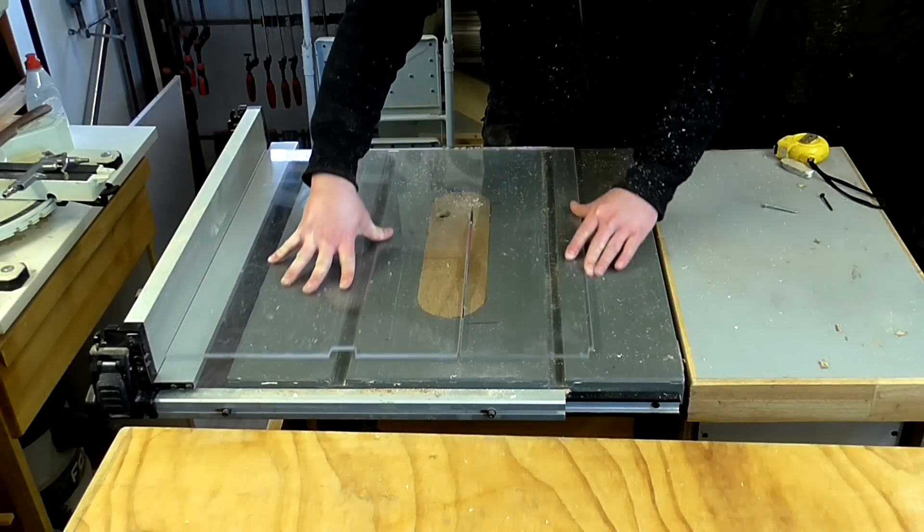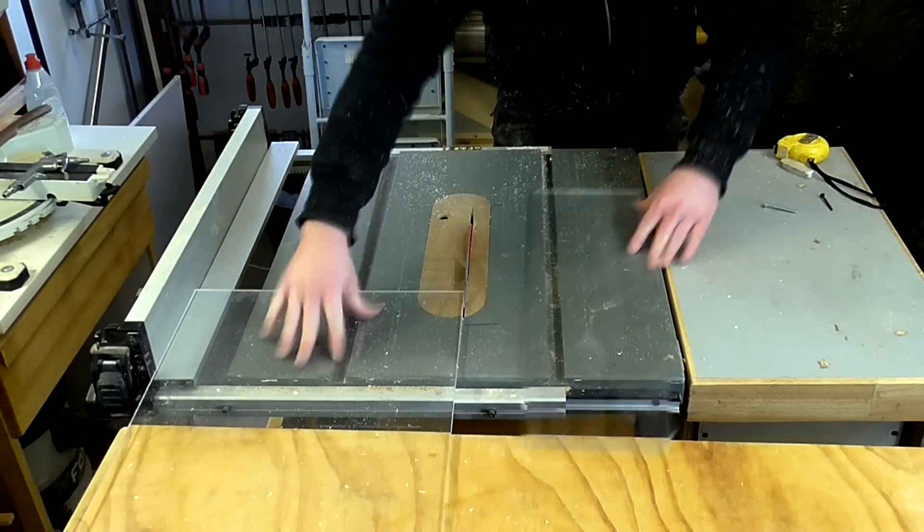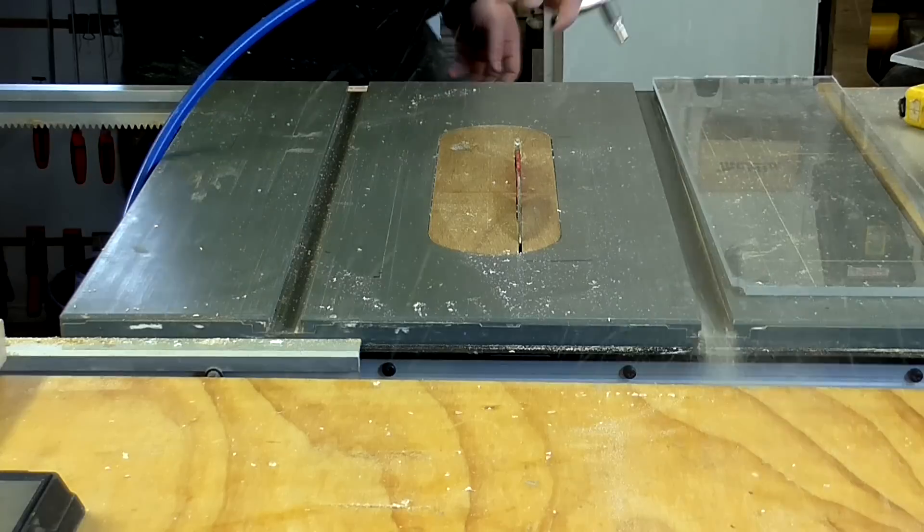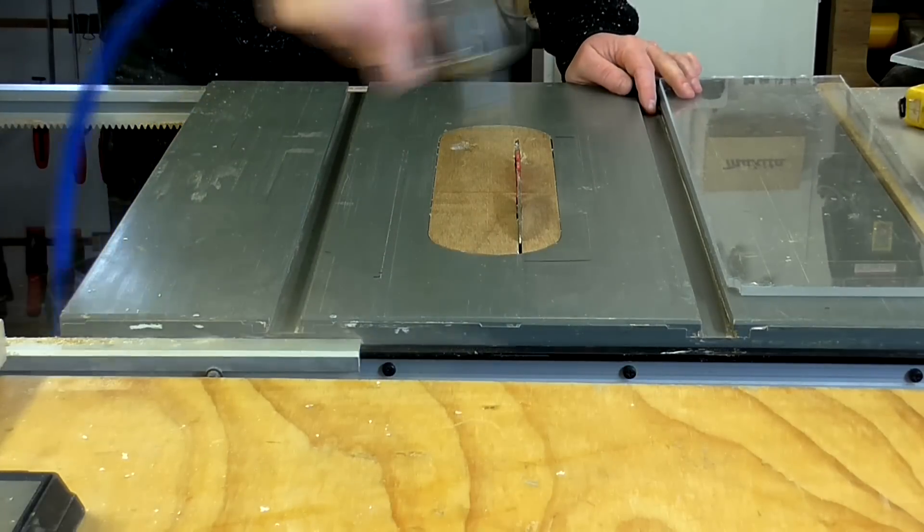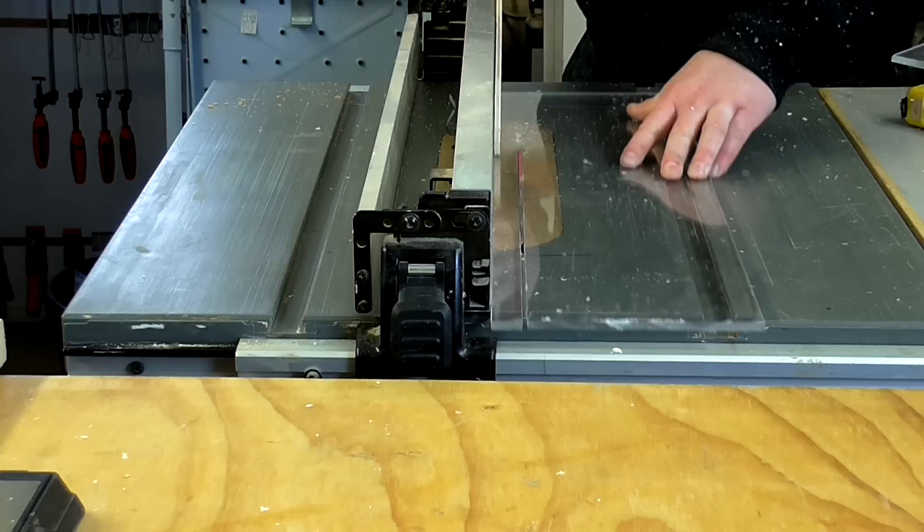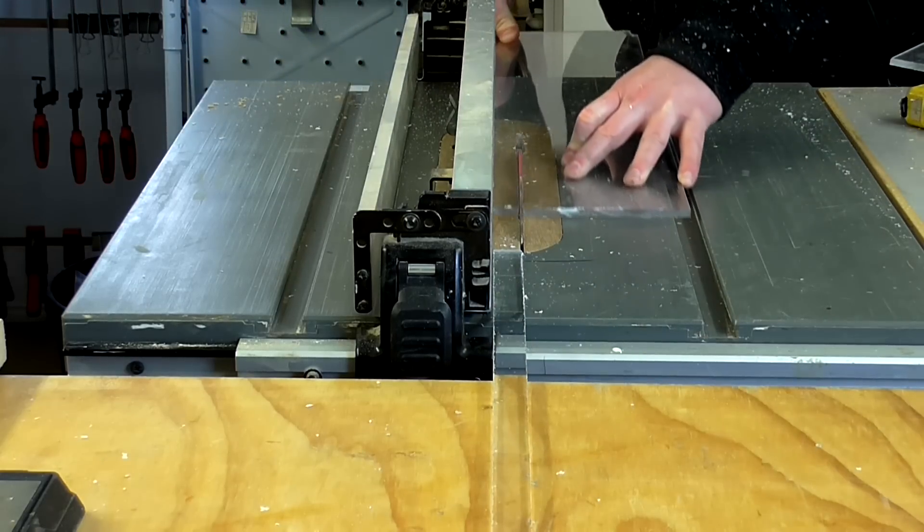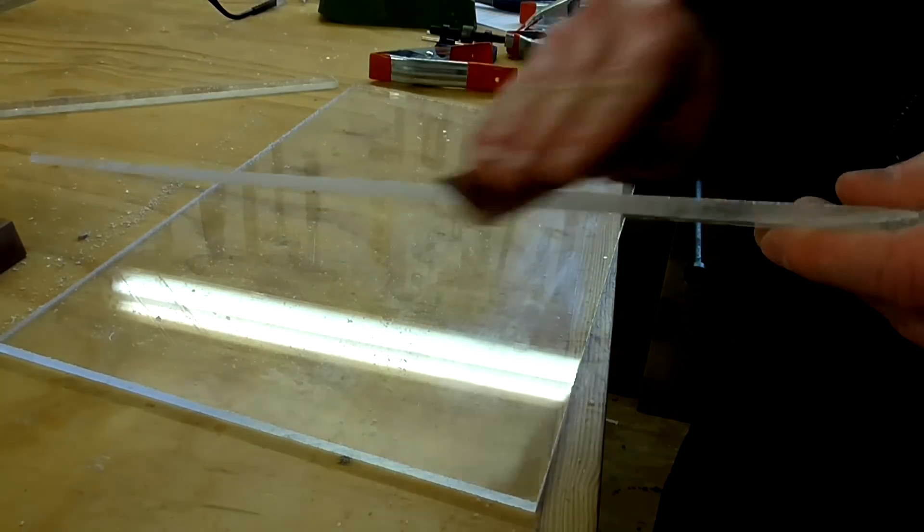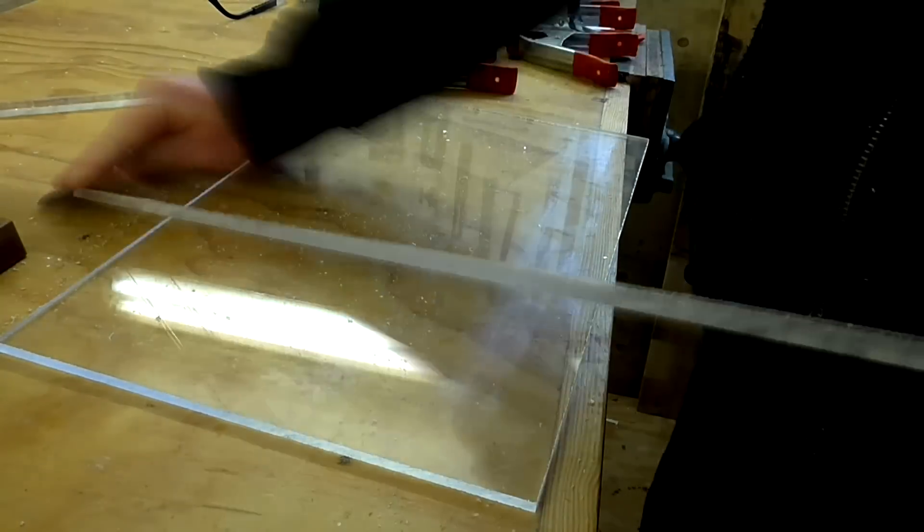I began by cutting a piece of perspex to the size that I wanted the sharpening station to be. Then I ripped some 20 millimeter strips to form the border. I sanded the sharp edges with an 80 grit paper.